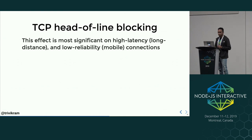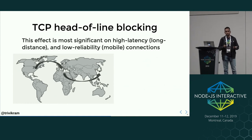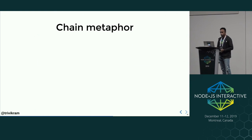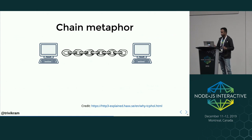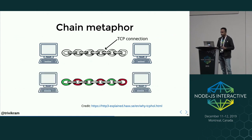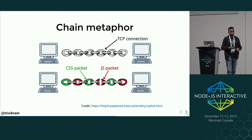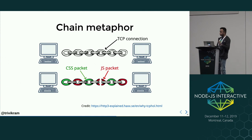This effect is most significant on high-latency networks over long distances, where the probability of a packet getting lost is higher, or on mobile connections. To understand this using a chain metaphor: imagine a TCP connection between two computers as a chain. Green links represent CSS packets and red links represent JS packets, both transferred over the same TCP connection. If a JS packet is lost or corrupted, the entire chain is broken, and all subsequent packets including the CSS packets have to be sent again.